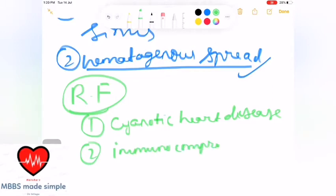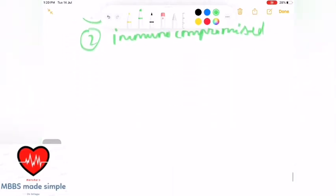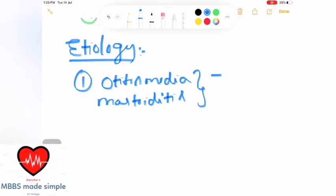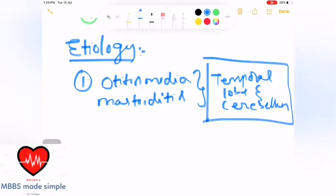Next is etiology. The interesting point in etiology - first one is otitis media and mastoiditis. This infection spreads to the brain and causes involvement of the temporal lobe and cerebellum. Temporal lobe and cerebellum are involved in otitis and mastoiditis.